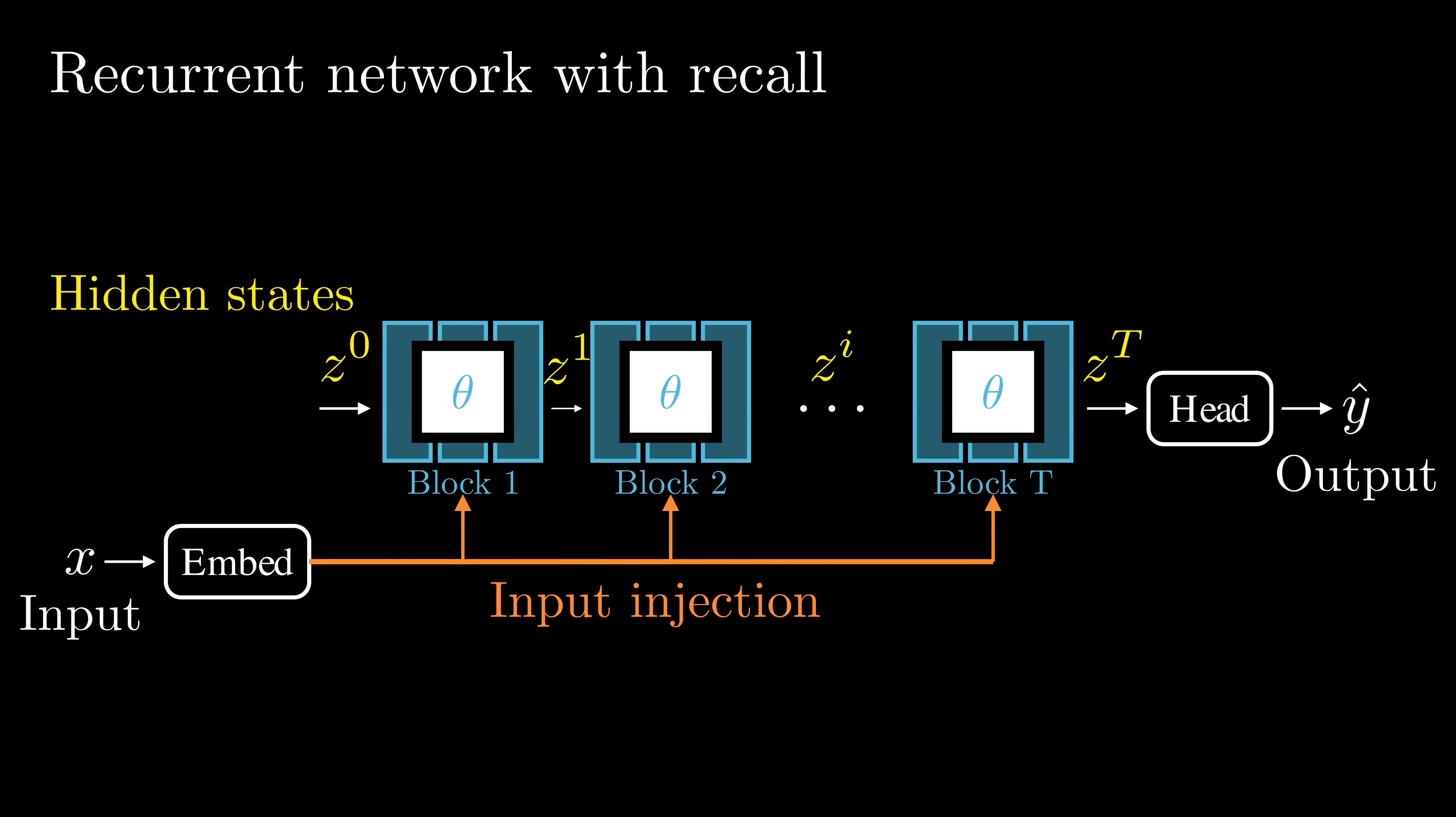This technique is often referred to as recall or input injection in loop transformers. It helps the model maintain awareness of the initial problem context throughout the reasoning process. The model can iteratively improve its solution.